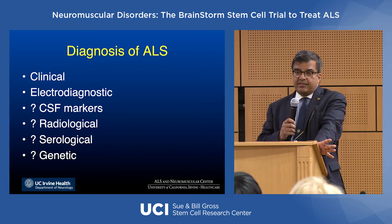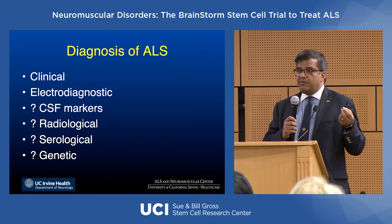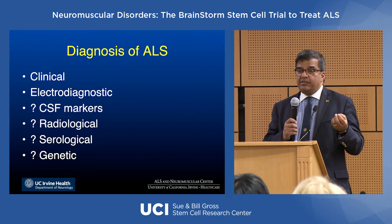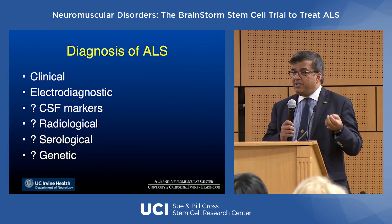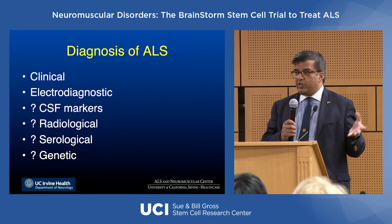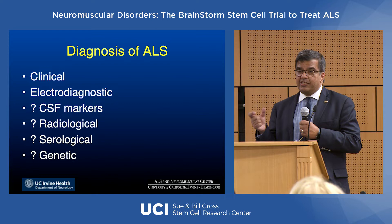Diagnosis of ALS is still primarily a clinical diagnosis — you cannot do an MRI or blood test, except for the 10 percent with genetic forms. This is where neurologists will always be important: you have to take a history, sit down with the patient, figure out the symptoms and exam findings, and suspect ALS. Most of the testing we do is to rule out other possibilities, since there are diseases that may look like ALS but are more treatable. Our job is to make sure we haven't missed any treatable condition.